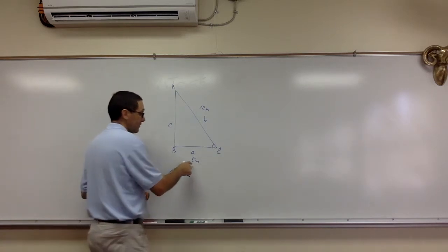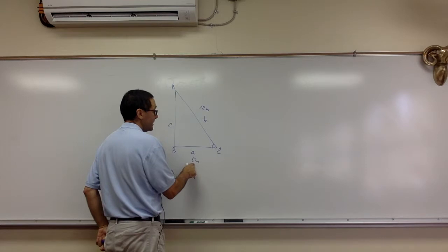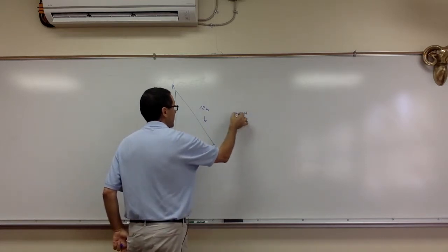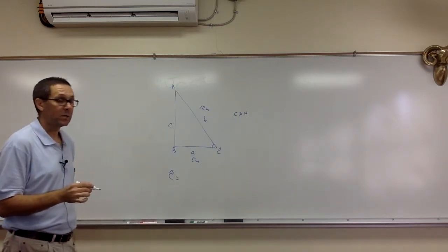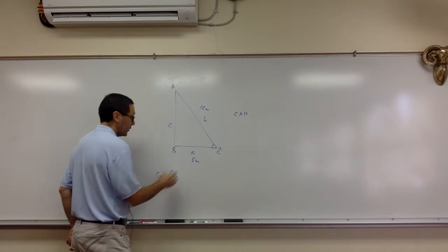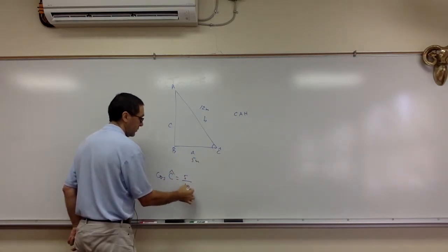I have, with respect to this angle, the adjacent and the hypotenuse. So adjacent and hypotenuse. So according to SOHCAHTOA, I have to use CAH. So I have to use cosine. So basically cosine of this angle is 5 over 12.